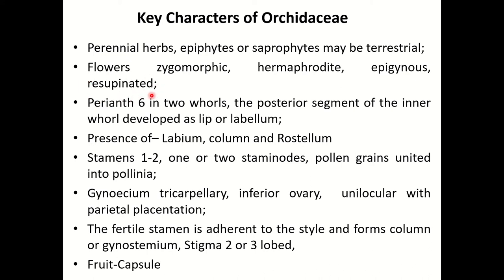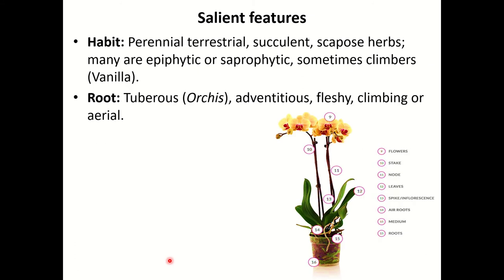Please note this is a very important feature of this family. Perianth is 6 in 2 whorls; the posterior segment of the inner whorl is developed as a lip or labellum. Presence of labellum, column and rostellum are very important features of this family. Stamens 1 to 2, with 1 or 2 staminodes; pollen grains united into pollinia. Gynoecium is tricarpellary with inferior ovary, unilocular with parietal placentation. The fertile stamen is adherent to the style and forms a column or gynostamium. Stigma is 2 or 3 lobed. Fruit is a capsule.